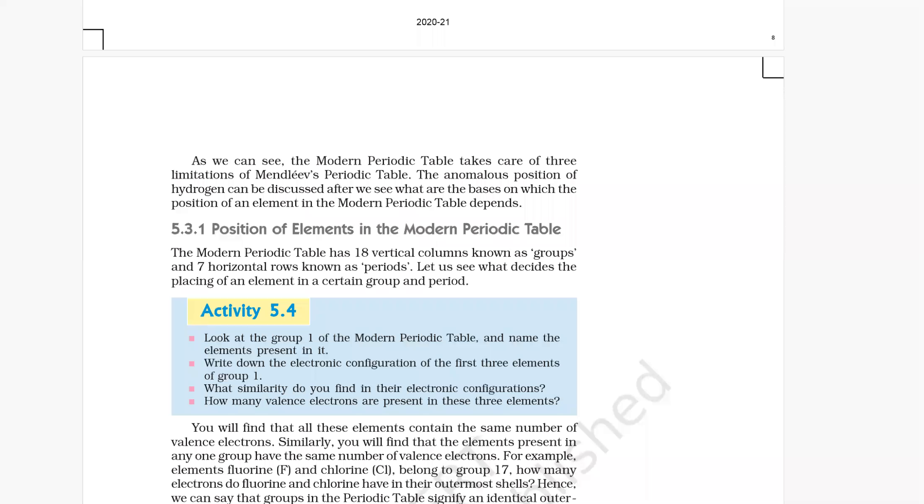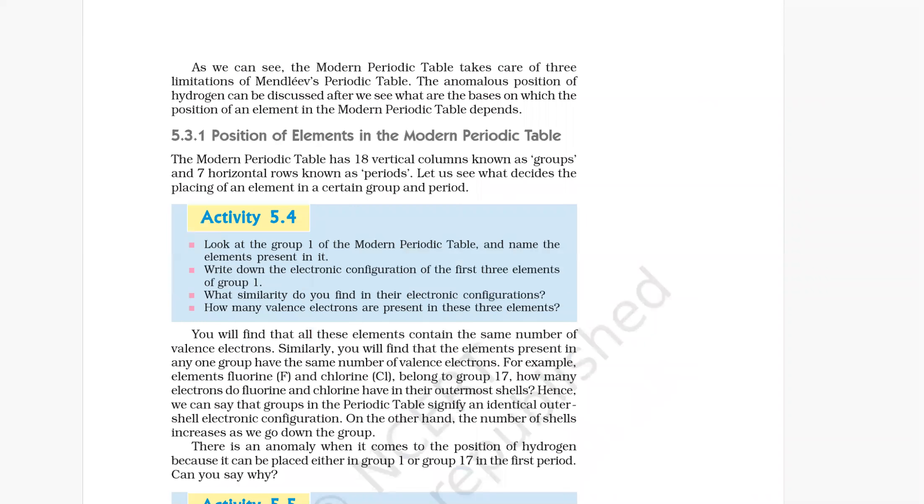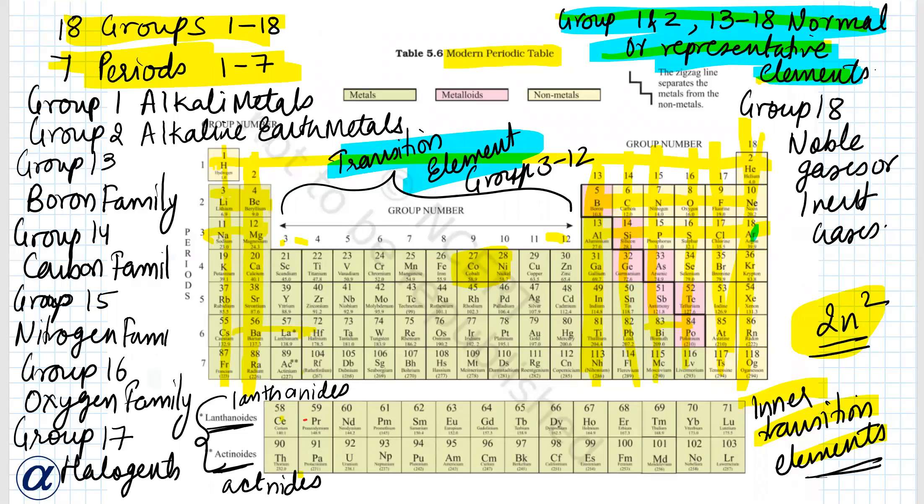Activity 5.4: Look at group one of the modern periodic table and name the elements present in it. So when we look at group one of the modern periodic table, let us see. It is helium, lithium, sodium, potassium.